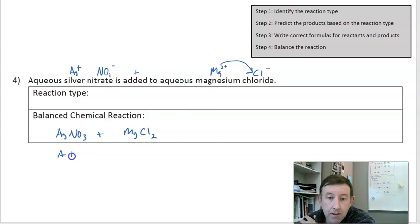One magnesium, we don't write ones in our formulas, so that's that. This looks like an AB plus CD type of reaction, which would make this double replacement.